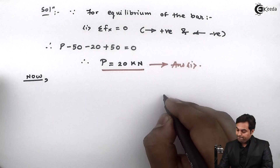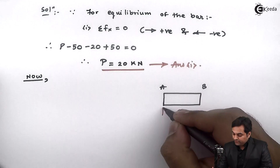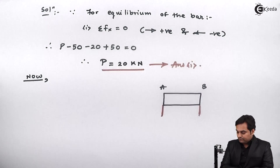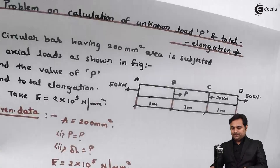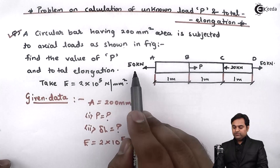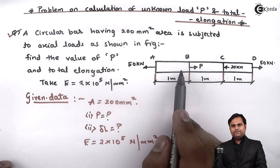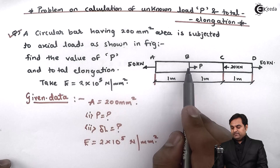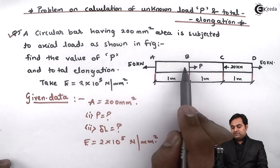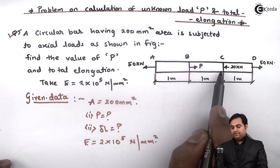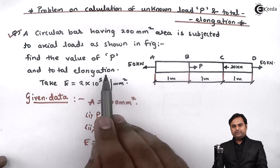Now I'll separate section AB — it has a length of one meter. In the AB portion, at point A the load is 50 kN towards left, and at B the load is P acting towards right. However, point B is the junction of AB and BC together, so I have to start from the individual point — at A the load is 50 kN acting towards left.